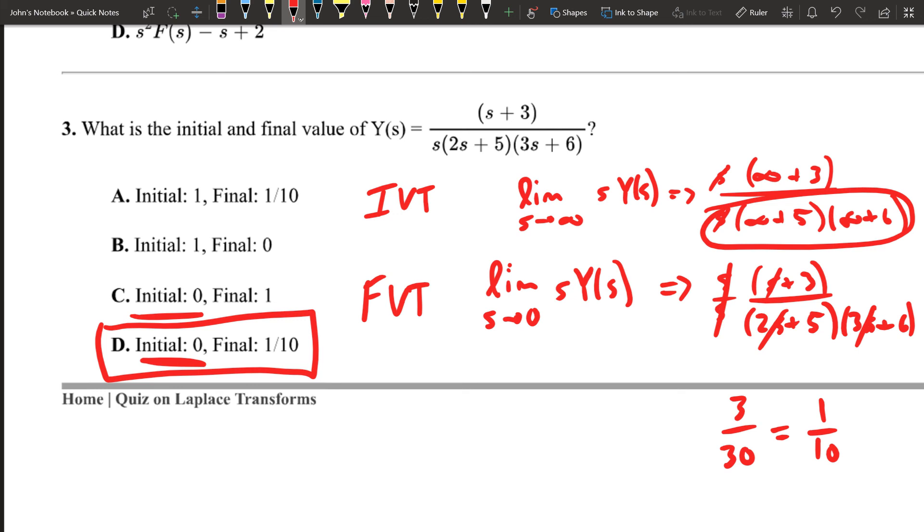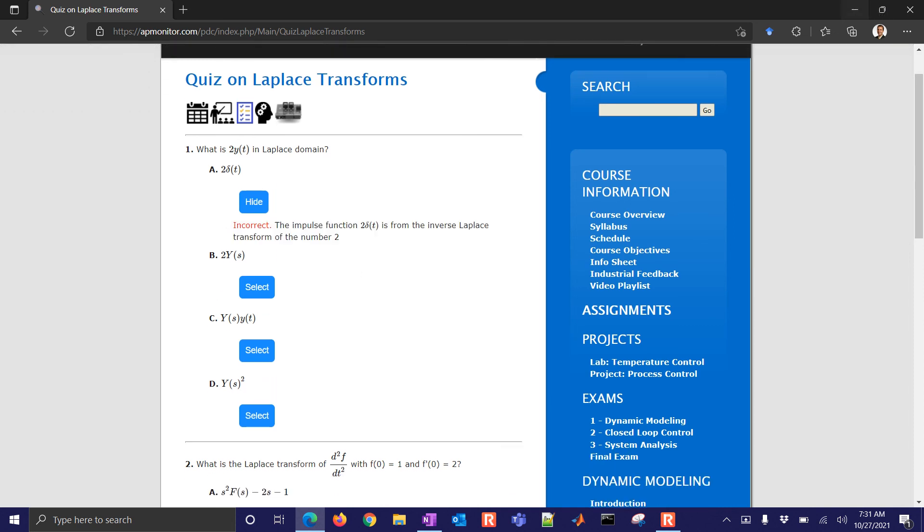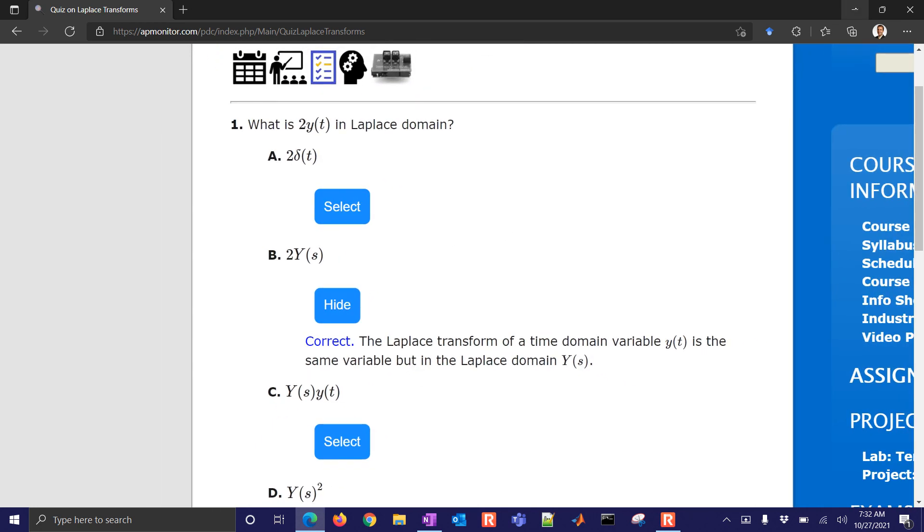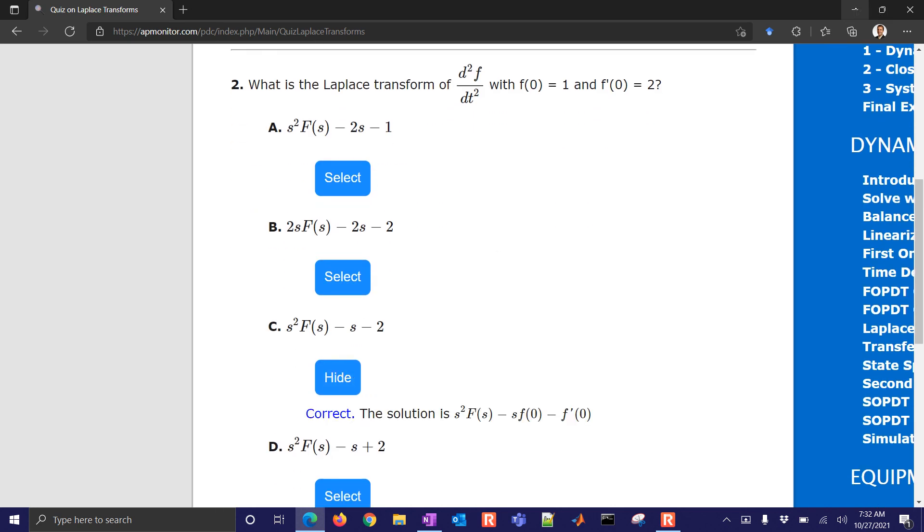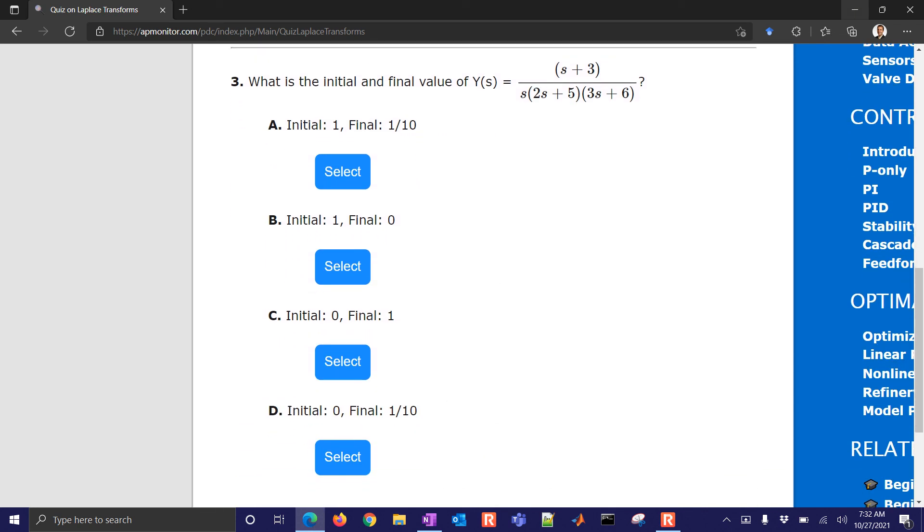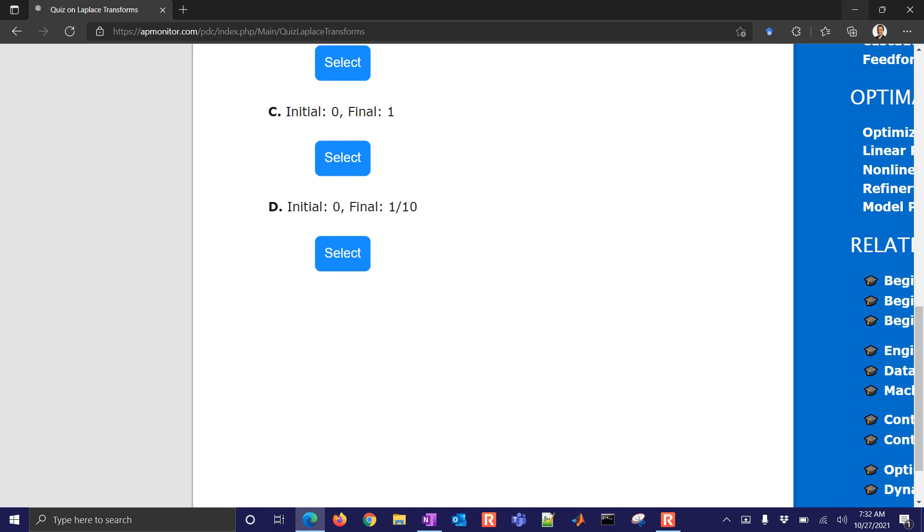There's the answer here. Now let's go ahead and just go back to the web page. You can select these answers and it will show you the explanation of why it's correct or incorrect for each one. There is our correct one for the first one, 2 times y of t in the Laplace domain. And then on the second one, there's the correct solution as we showed from the Laplace tables. And then the initial and final values of y of s, and it shows the derivation of those two.